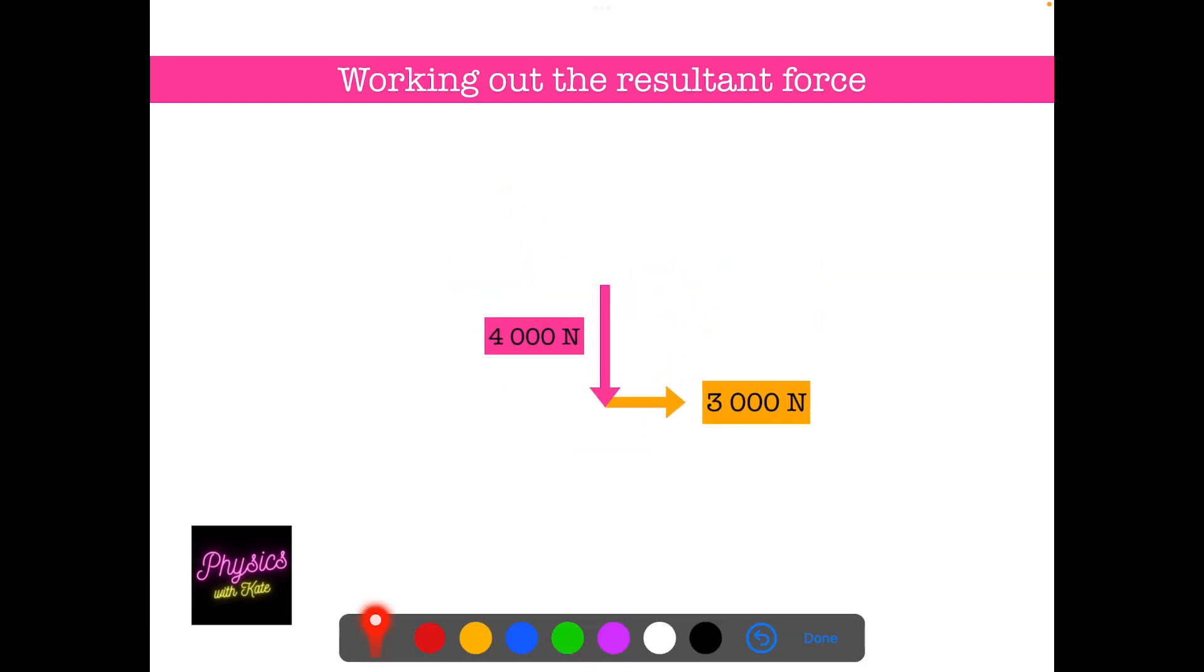Now, this is called the tip to tail method of drawing vectors and finding the resultant vector. The forces are vectors because they've got size and direction. So what you do is you keep one of the forces the same and then draw the other force on the end of it. So this is called tip to tail because the tip of the first force touches the tail of the second force.